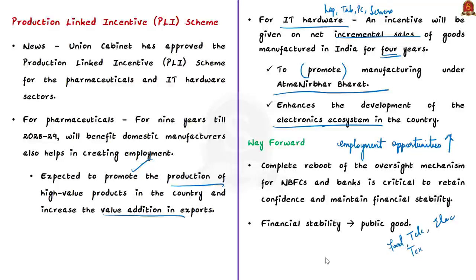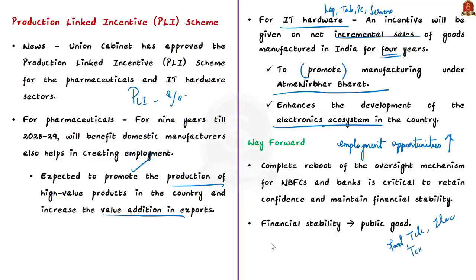In any PLI scheme, an incentive — a production linked incentive of a certain percentage — is offered to companies on incremental sales of goods manufactured in India covered under target segments. Incremental sales is the key word: if a company under the PLI scheme sold 100 units last year and sells 120 units this year, the incentive will be offered for those additional 20 units.